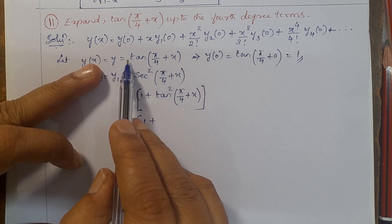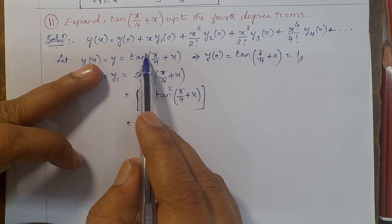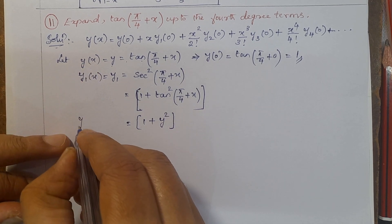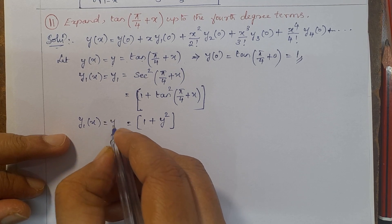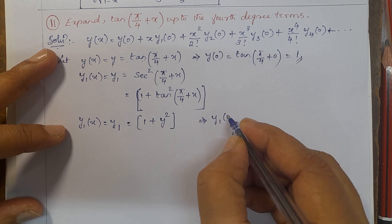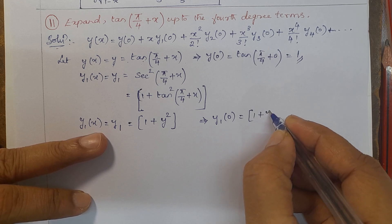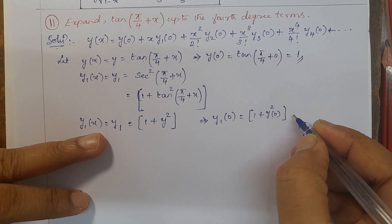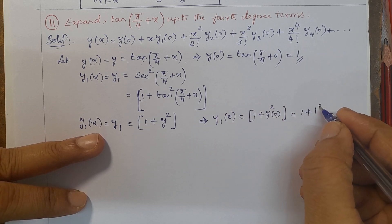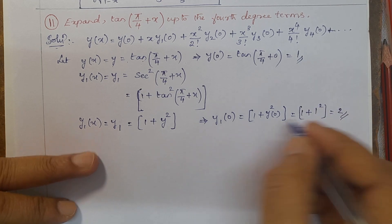Since y = tan(π/4 + x), we have y² = tan²(π/4 + x), so y1 = 1 + y². It implies y1(0) = 1 + y(0)² = 1 + 1² = 1 + 1 = 2. So y1(0) = 2.